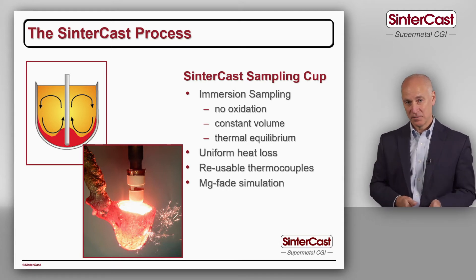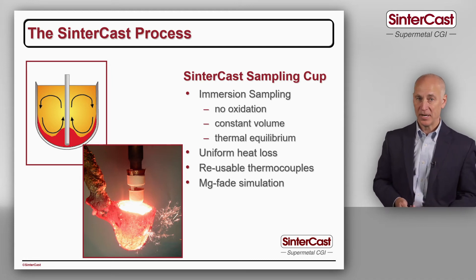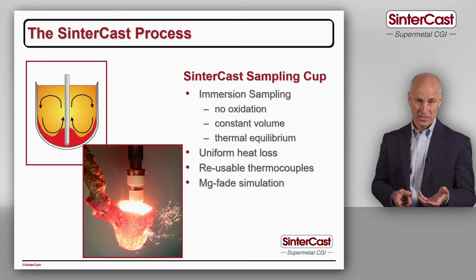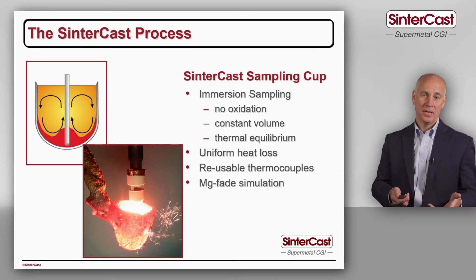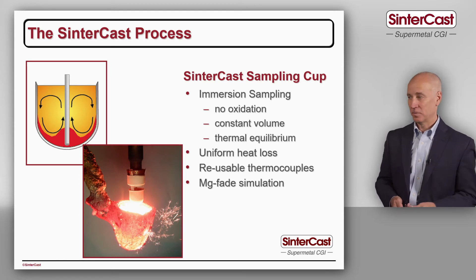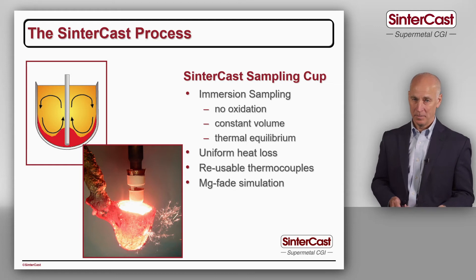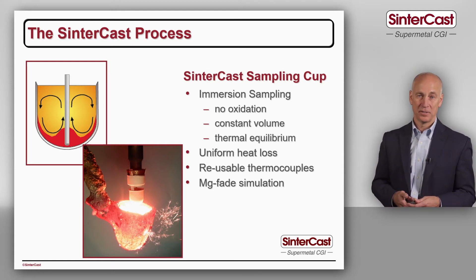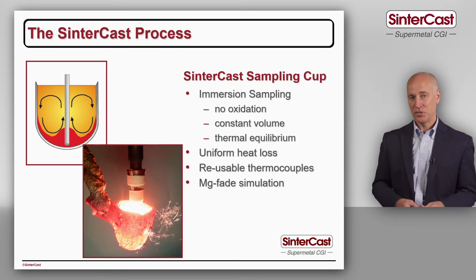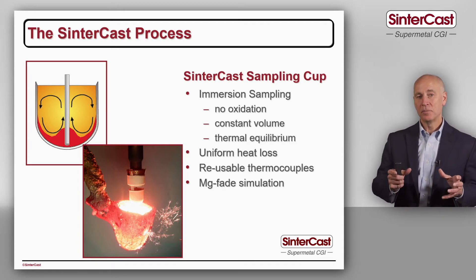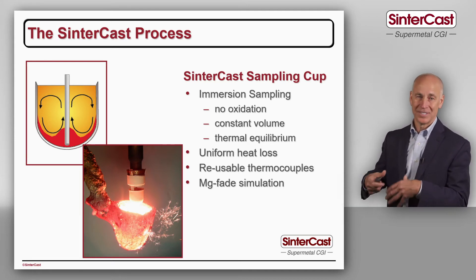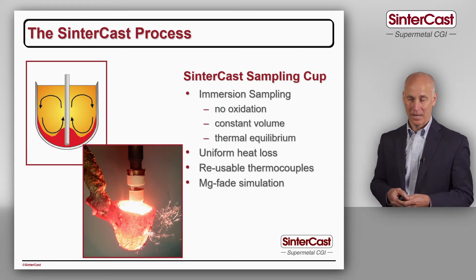When we lower the spoon, the iron flows over the edges of the sampling cup, so we always have a constant volume — we don't rely on the operator filling the cup fully. Most importantly, when we lift the sampling spoon over the sampling cup, the cup becomes hot and the iron and the sampling cup cool down together, so there's no chilling. We've designed the sampling cup to behave as a sphere because the sphere is the easiest geometry to control — everything's happening uniformly in all different directions. This is so important in the production of CGI because CGI is such a narrow material; we have to be sure that everything we're measuring is because of differences in the iron, not because of differences in the sampling technique.